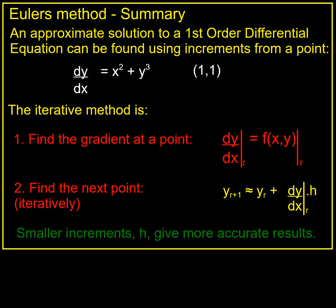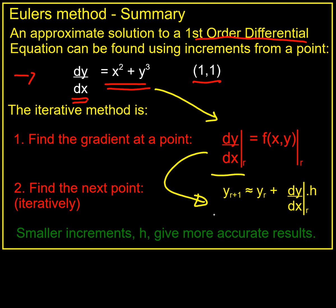Here's my summary. If I want to solve a first order differential equation — which can be arranged so I have dy/dx on one side and some functions of x and y on the other side — and I know a start point, I can use this Euler method. I use my differential equation to find my gradient, substitute that into my Euler linearization, and find point after point iteratively. And if I want to improve the accuracy, I make the little h smaller. There you have it.